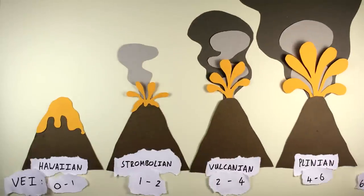Hawaiian volcanoes are the weakest and are characterised by a steady flow of lava with little to no vertical ejection. These have a volcanic explosivity of zero.